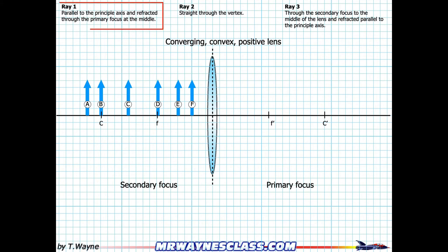To do ray one, I'm going to go parallel to the principal axis and refract it through the primary focus at the middle of the lens. So A goes parallel until it hits the middle, and then it refracts through the primary focus on the right. That gives me a line. I've got a dotted line on the left because those are virtual lines — the light goes through the lens so it belongs on the right, which is the real image side. On the left is the virtual side where the refracted light won't actually be seen.